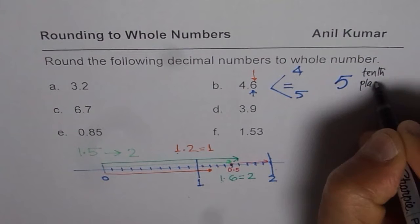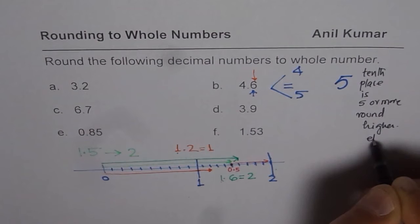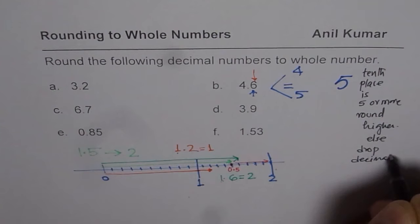Since this 6 is 5 or more, so we are looking for 10th place being 5 or more. So if 10th place is 5 or more, we round higher. So let me write down, 10th place is 5 or more, round higher, else drop decimals.